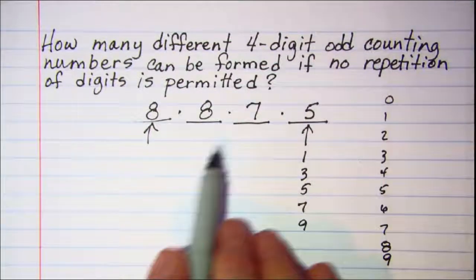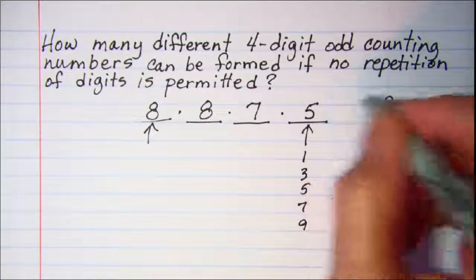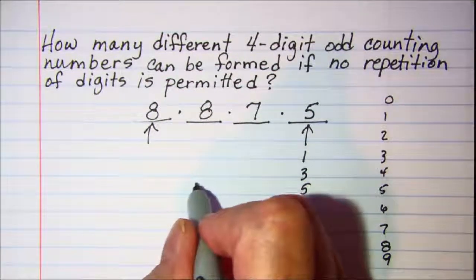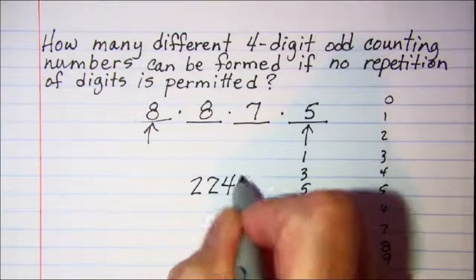And then once I use one here I can't repeat it. So I'll only have seven for this position. If I do the multiplication here, this gives me 2,240 numbers.